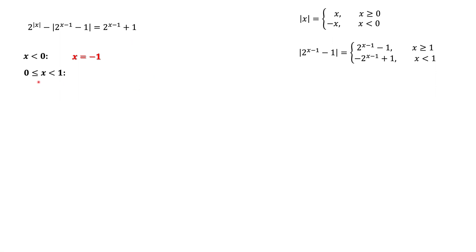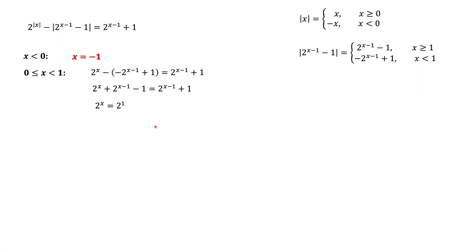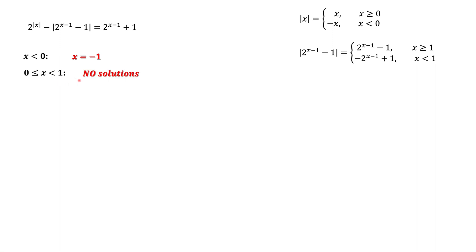Case 2: 0 ≤ x < 1. Here |x| = x but |2^(x−1) − 1| still equals 2^(x−1) − 1 (same as before). After substituting and canceling 2^(x−1), we get 2^x = 2^1, which gives x = 1. However, x = 1 does not belong to the interval 0 ≤ x < 1, so there are no solutions in this range.